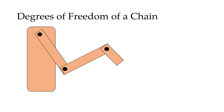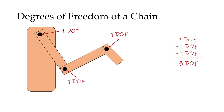Joints rarely work in isolation but work as part of a larger chain. To determine the degrees of freedom of a chain, you simply add all the degrees of freedom of each individual joint. For example, a four-linked chain with three joints — each having one degree of freedom, like shoulder, elbow, and wrist constrained to the sagittal plane — gives one plus one plus one, totaling three degrees of freedom for the chain.